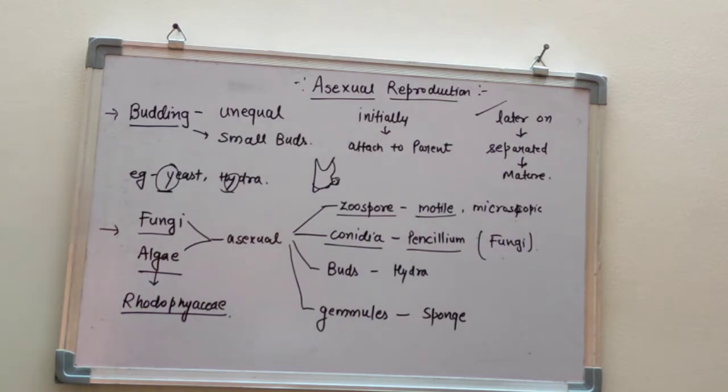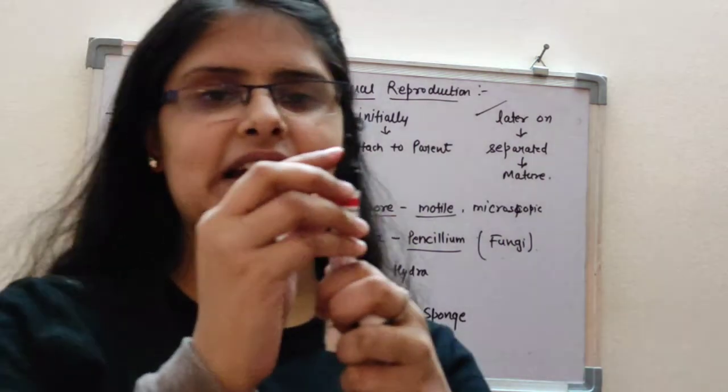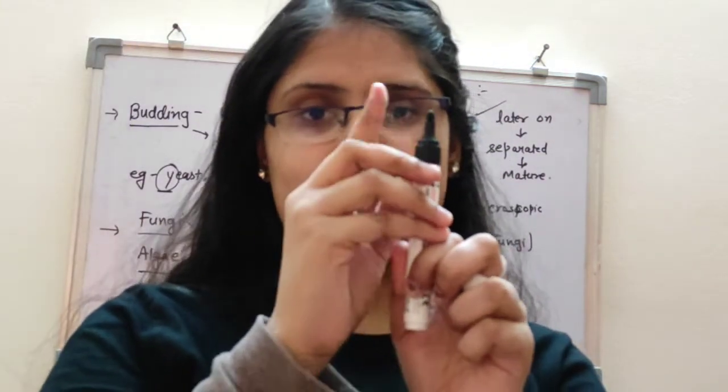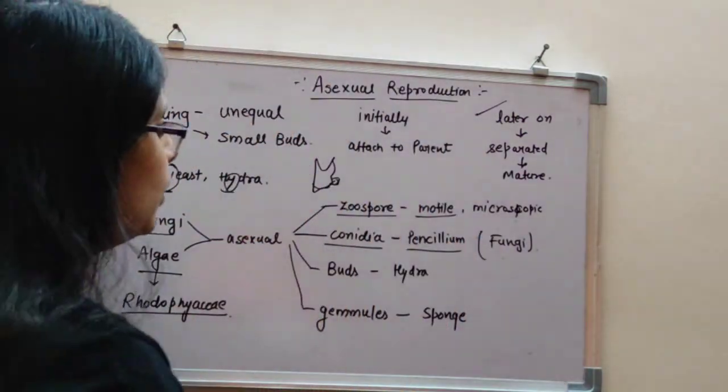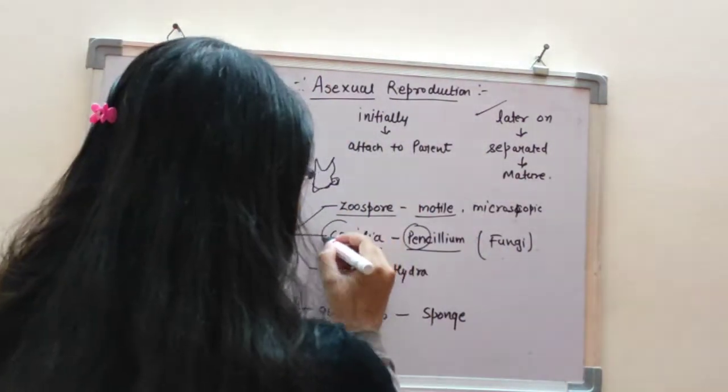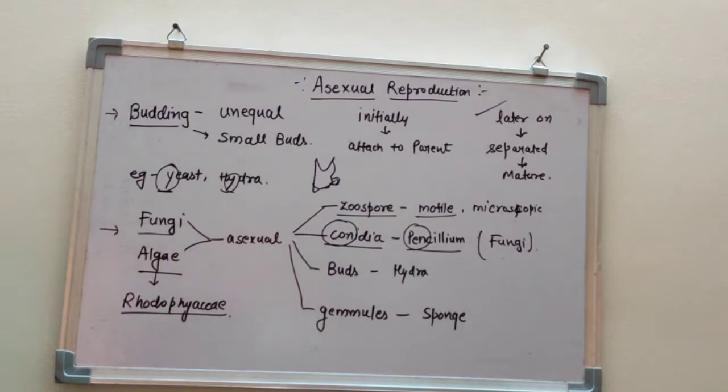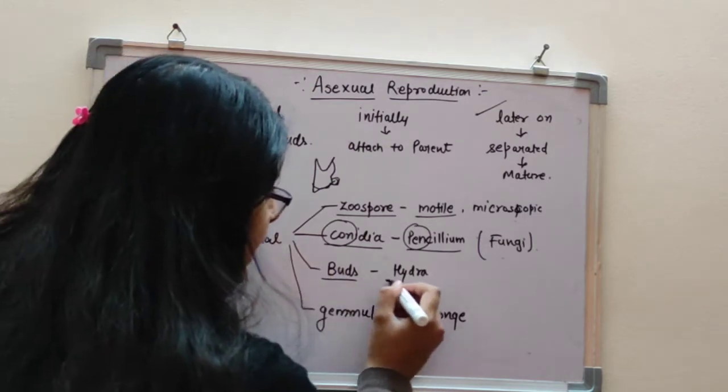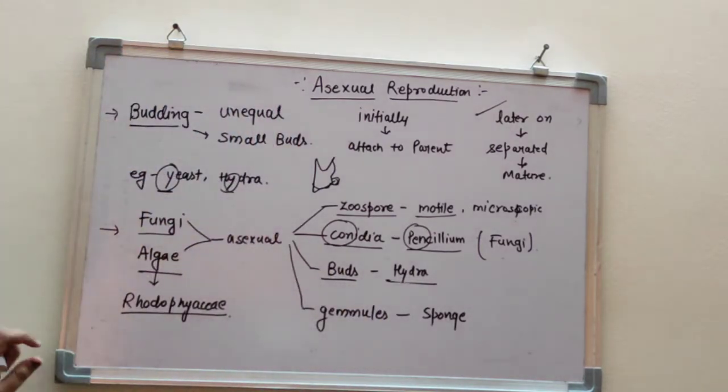Remember one thing. When there is a pen, there is a cone on the pen. You will see a cone on the marker. So when you remember penicillium, you will get conidia on the penicillium. Buds are in hydra. So I have already told you about hydra.